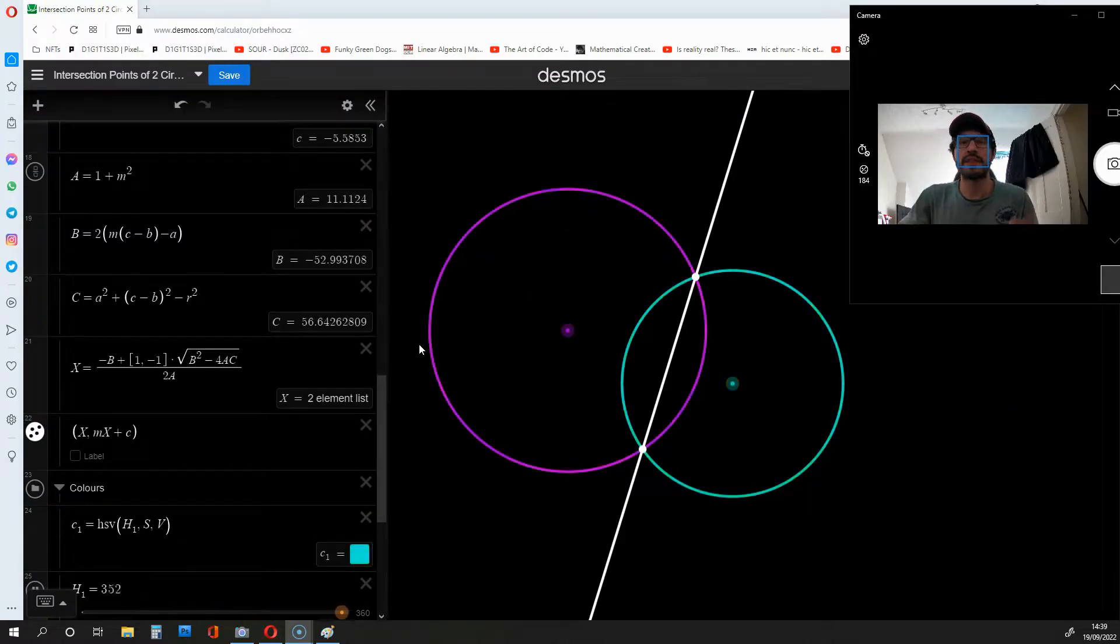Now, the best place to test out these equations is on Desmos. Okay, so the value of large A can be seen over here, along with large B, large C. Okay, and we've made large X equal to this. Okay, and if we plug that large X into mx plus c, we get the y coordinates of the intersections.